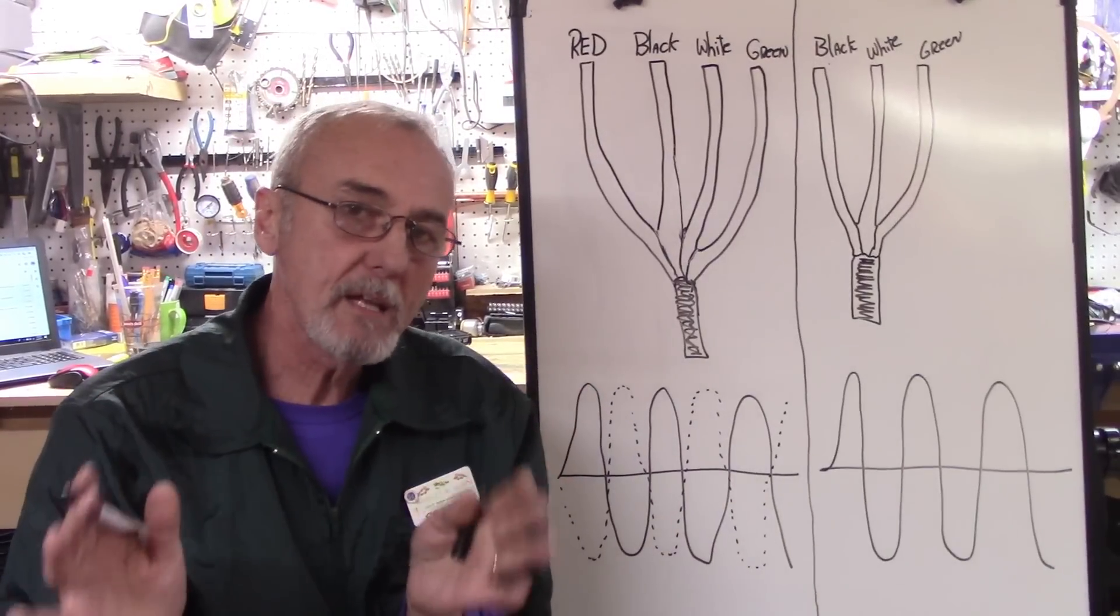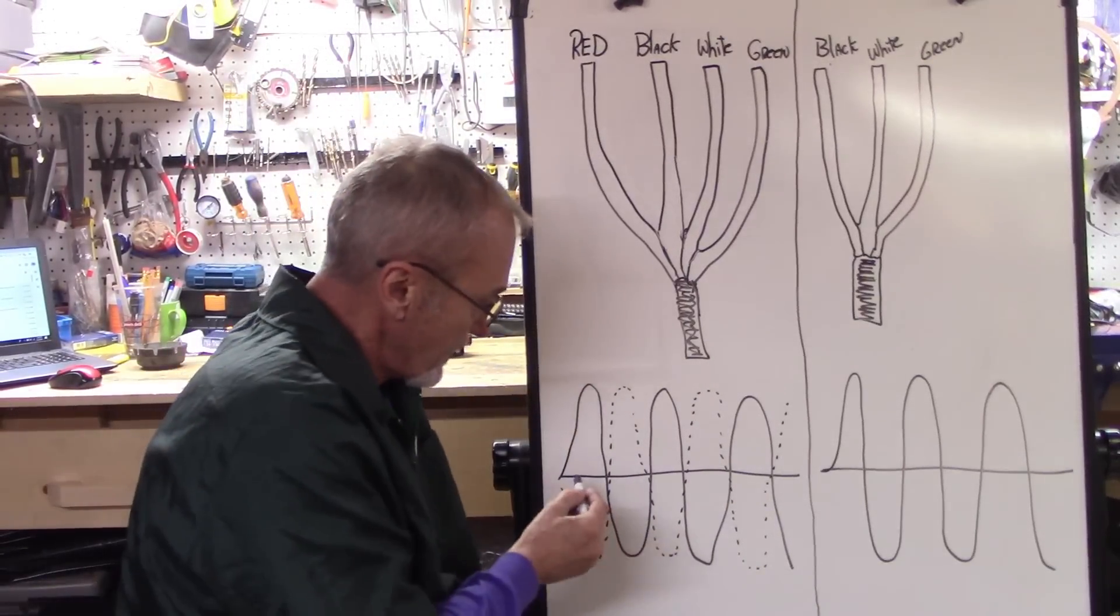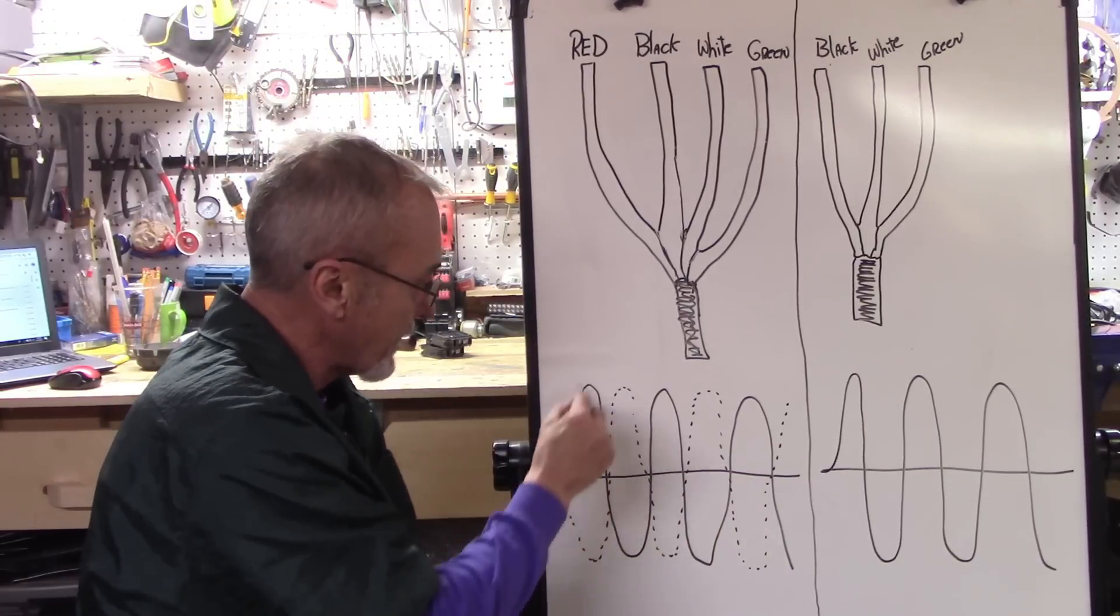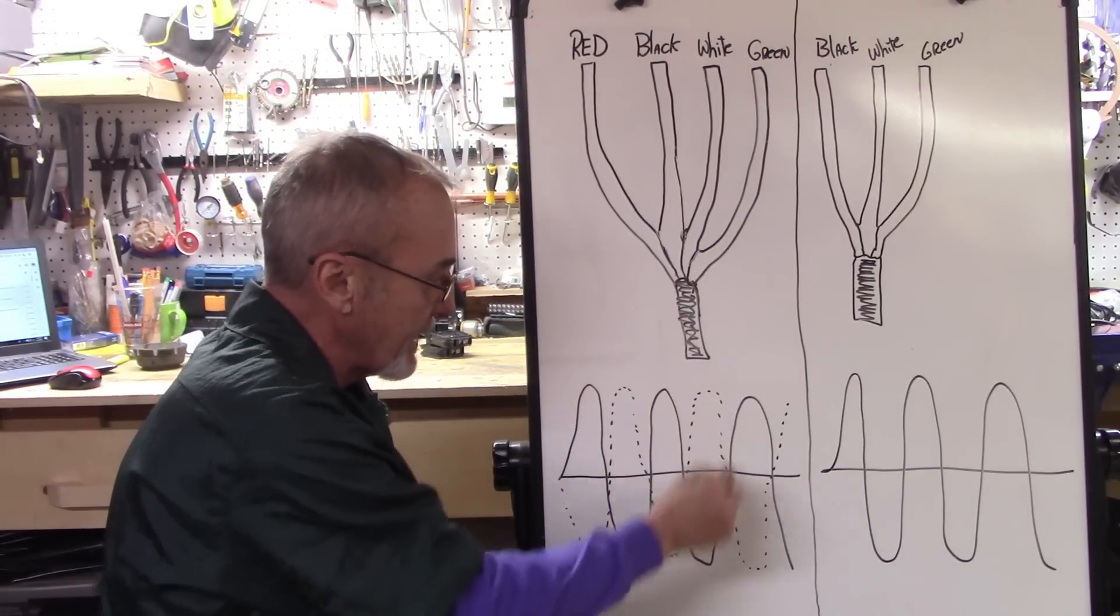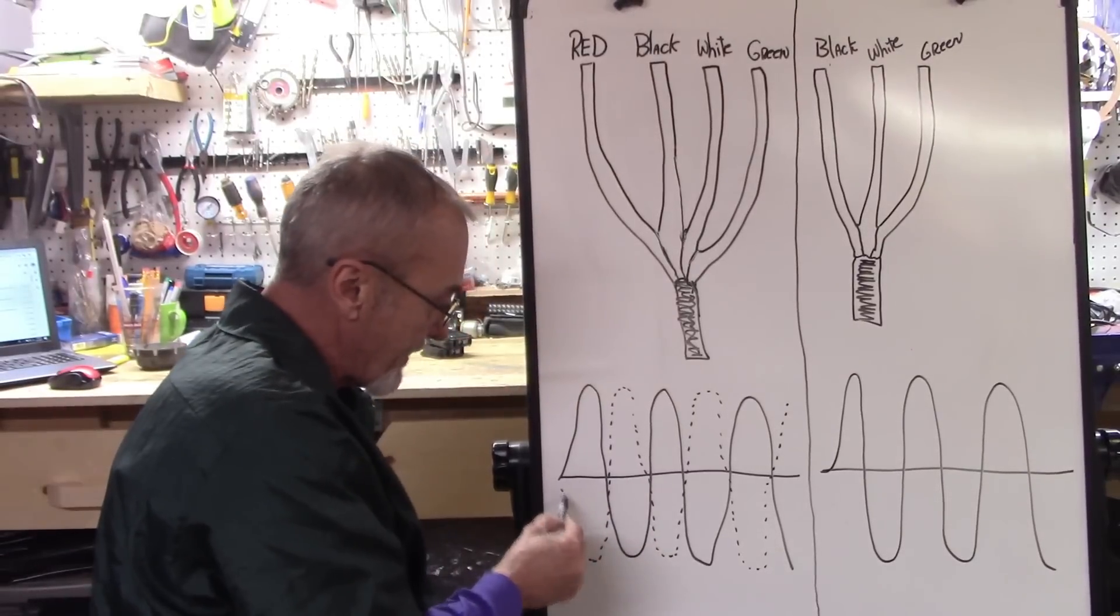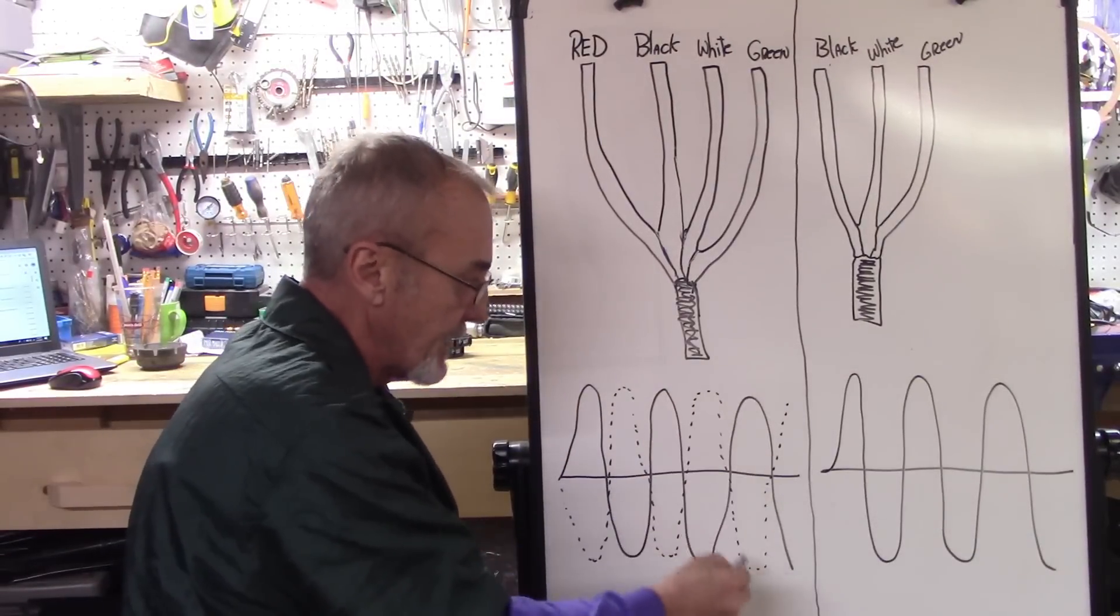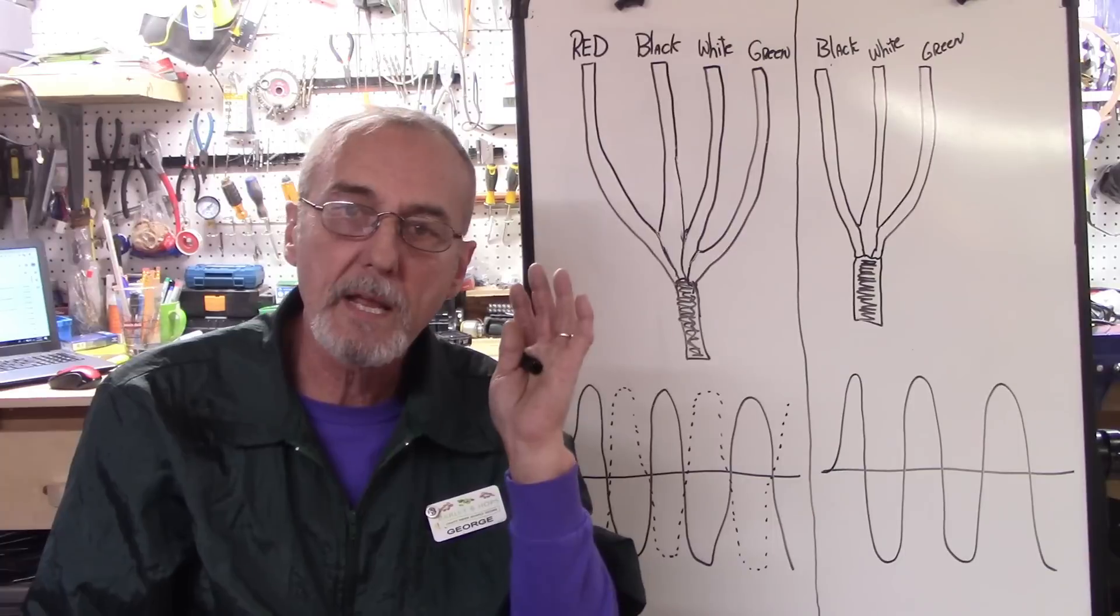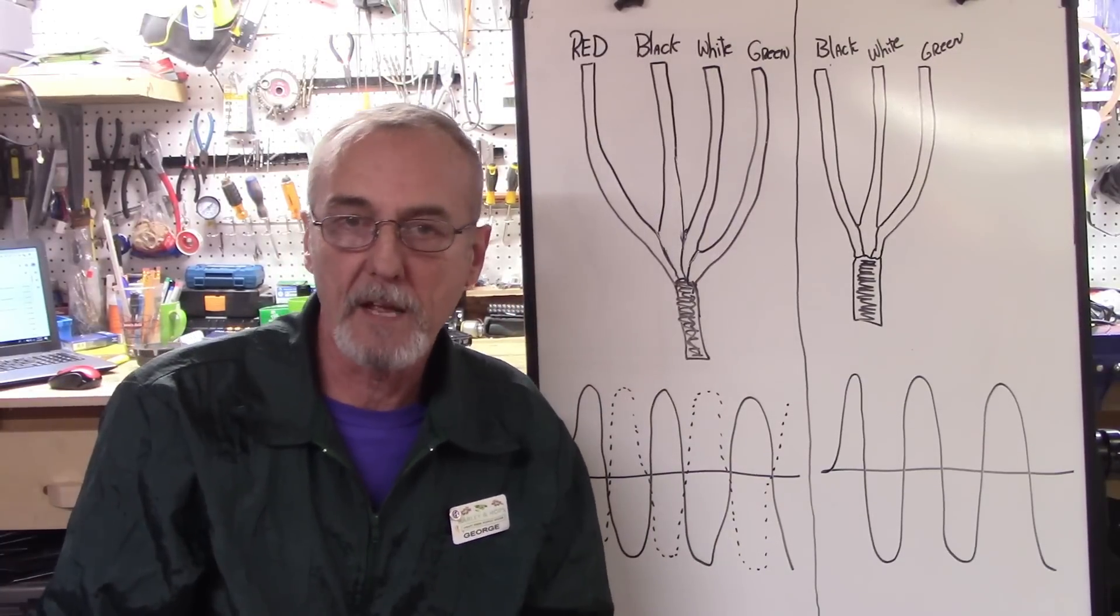So, first of all, here's how we get 240 volts. Here's a sine wave, a hand-drawn sine wave. And you'll notice I've got a positive, negative, positive, negative, positive, negative. That's 120 volts. At the same time, I have a negative, positive, negative, positive, 120 volts. That's what's known as being 180 degrees out of phase. So this is actually separate phases of an electrical sine wave.